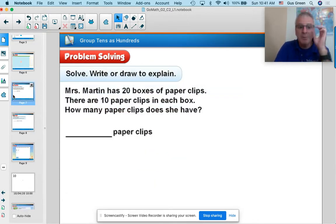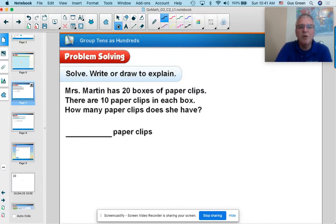All right, now this is a story problem. Mrs. Martin has 20 boxes of paperclips. There are 10 paperclips in each box. How many does she have? So the 10 makes it super convenient because you know how to draw a 10.